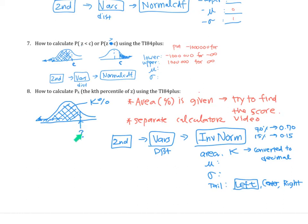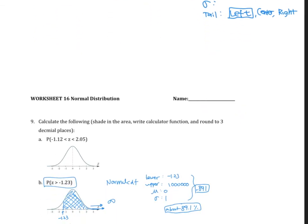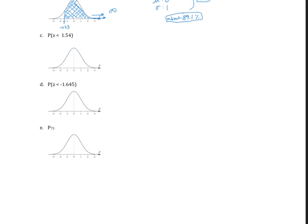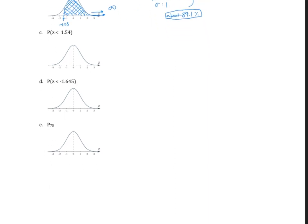From the calculator function it will give you the score that gives you that many percent. Having said that, let's look at number nine, section E, P75 percent. They want the 75th percentile z-score.